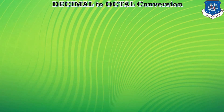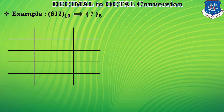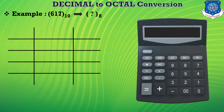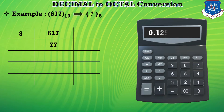Now we take another example for further learning. Let's take 617 as a decimal number for its octal conversion. We use the divisional method and for our reference we use a calculator. Here 617 is divided by 8 and we get the answer 77.125. So 77 becomes the quotient and the remaining term is 0.125. Multiplying 0.125 by 8 we get a remainder of 1, and we place this 1 in the remainder position.